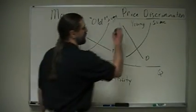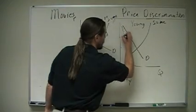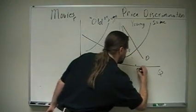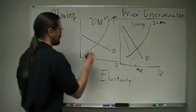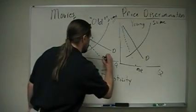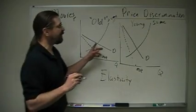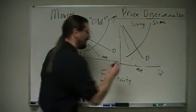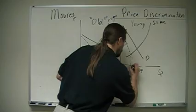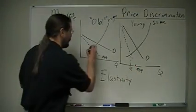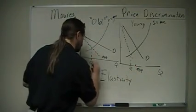But the demands are different. So we do our trick of how do you calculate what the marginal revenue is. Here's my marginal revenue for young people. Here's my marginal revenue for older people. And the amount of people you expect to go to a movie, here's the quantity for young people. Here's the quantity for older people.